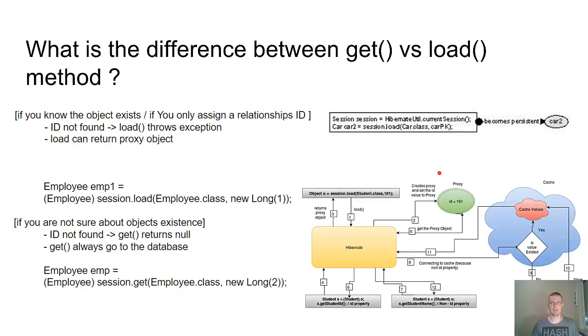What is the difference between GET and LOAD methods? First of all, we have two situations here. If you know that the object exists and the other situation is if you only want to assign a relationship ID, then use the load method. The load will throw an exception if the ID is not found. But load can return the proxy object, a placeholder which triggers the loading of the real object without hitting the database unless it is required.